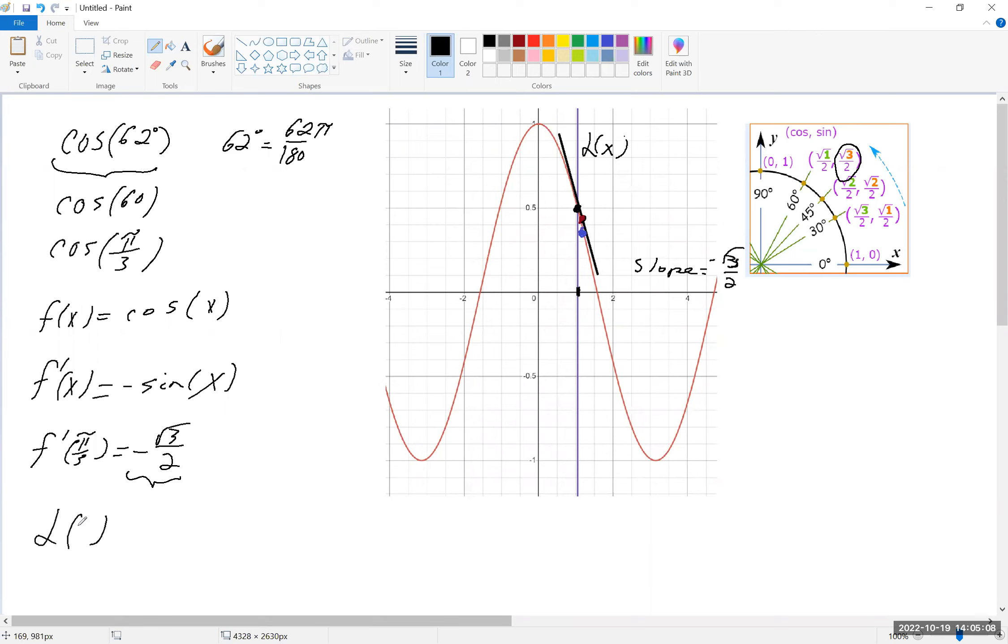So the linearization is going to take the slope in its point slope form, so it's x minus, now we're going to use that point, which is pi over 3. And then we need plus f of pi over 3.